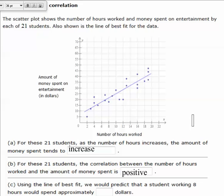And so lastly, it says, using the line of best fit, we would predict that a student working eight hours would spend approximately blank dollars. So we want to know eight hours what they're spending. So if we were to come up here to eight hours, we want to figure out about how much that's going to be.